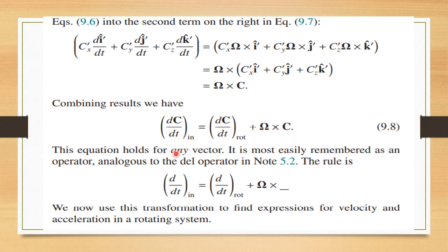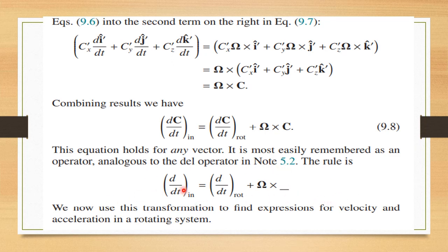This equation holds for any vector and can be remembered as an operator rule: d/dt in the inertial frame equals d/dt in the rotational frame plus omega cross. We operate this on the vector of interest, allowing us to relate inertial and rotating frames. We will use this transformation to find expressions for velocity and acceleration in the rotating system.